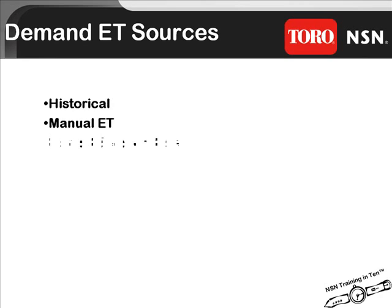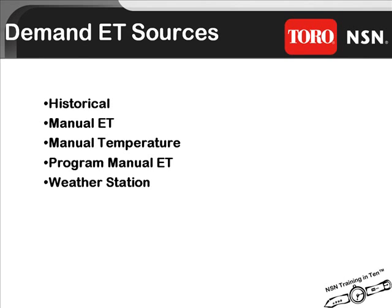SitePro can also estimate demand ET based on the high and low temperature for that day. Program manual ET allows you to irrigate using different values for different programs, or you can tie a weather station directly to a program and have the software automatically generate run times. These sources can be combined — for example, you can set manual ET at two-tenths of an inch for fairways and tees, set program manual at 15 one-hundredths for roughs and approaches, use a default run time of ten minutes for greens and surrounds, and tie your weather station to the driving range and clubhouse.